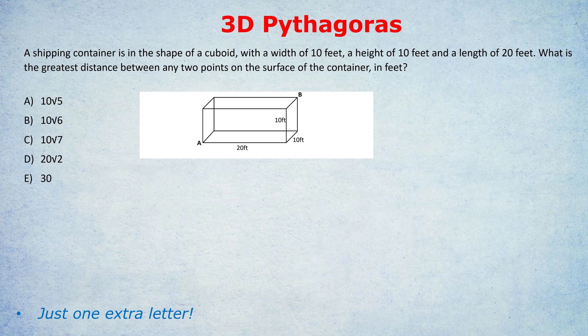So I've drawn it out here. By the way, to draw a cuboid, just draw a rectangle, then draw a rectangle behind it overlapping, and then join up the corners and then you'll have a nice three-dimensional cuboid. And I've labeled the sides 20, 10, and 10. Now what are they talking about when they say the greatest distance between any two points on the surface of the container?